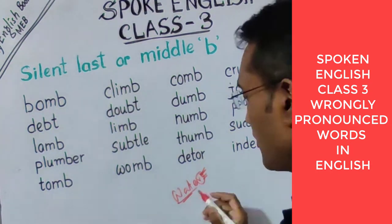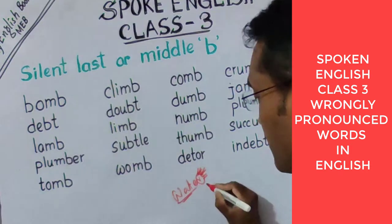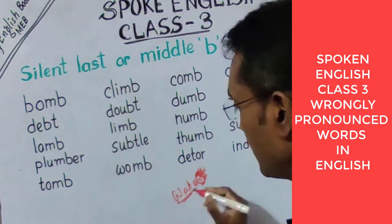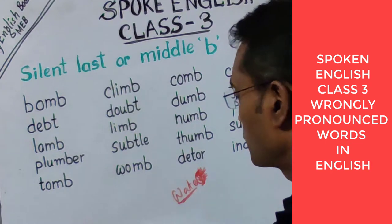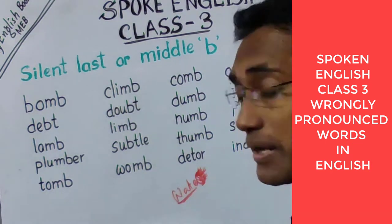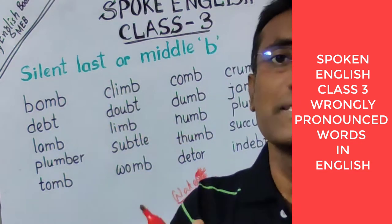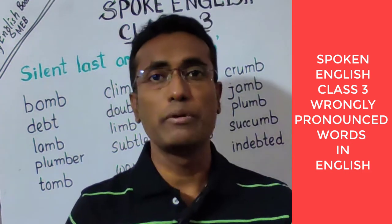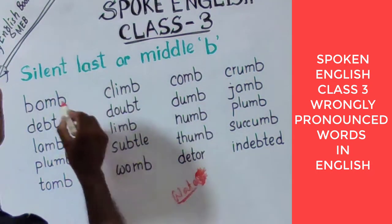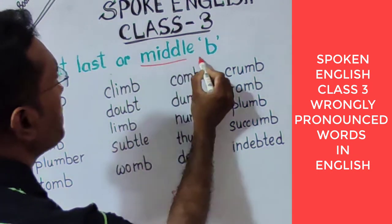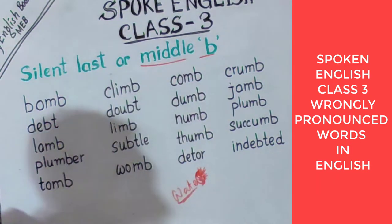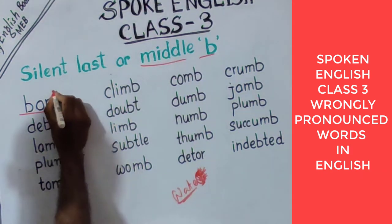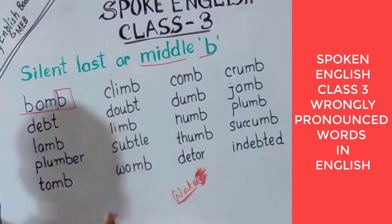For example, when the letter 'R' comes last in a word, we generally pronounce it clearly — but that's wrong. When 'R' is at the end of a word, it remains silent. So the correct pronunciation of 'water' is 'water,' not with a hard R. We often incorrectly include these silent letters in our daily speech. So first, let's look at silent last or middle 'B.' Here B-O-M-B — the B always remains silent.